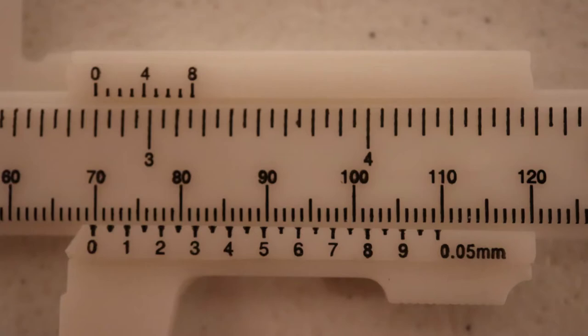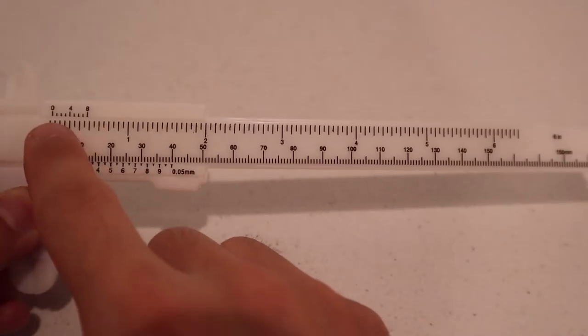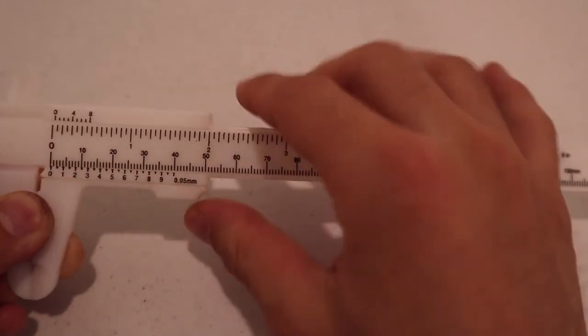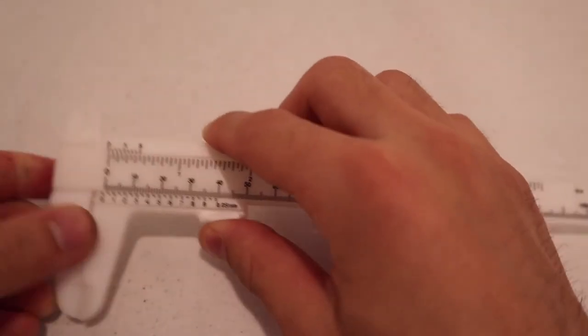The vernier scale does not exactly have a unit, but the top scale should be used for measuring in inches, and the bottom scale should be used when measuring in millimeters.